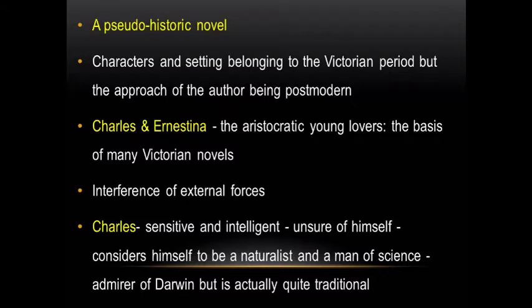Charles Smithson is sensitive and intelligent but unsure of himself. He considers himself to be a naturalist and a man of science. He is an admirer of Darwin and is pleased with himself that he is one of a minority in the 1860s to hold scientifically advanced ideas. Charles is actually quite traditional, though he would like to think that he is not. He quotes Darwin and dabbles in paleontology, representing the fashionable young man of his day who rebels against what he sees as the stiffness of his society.